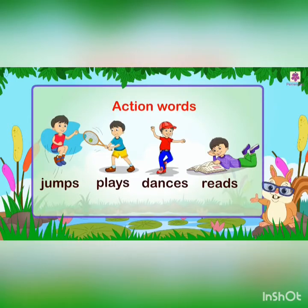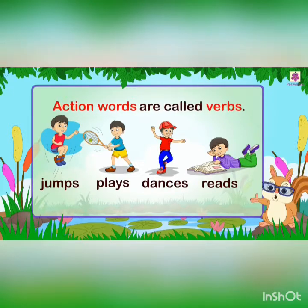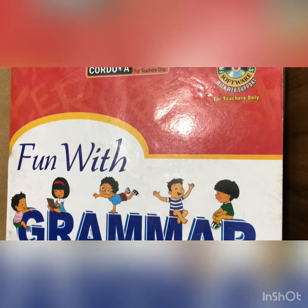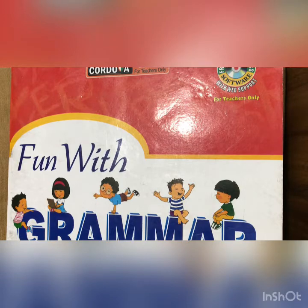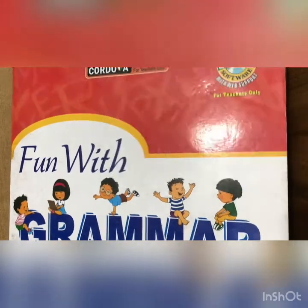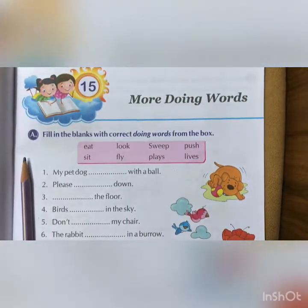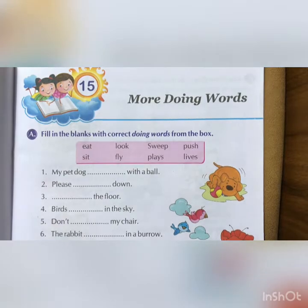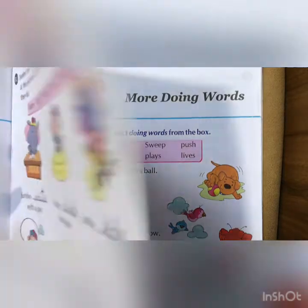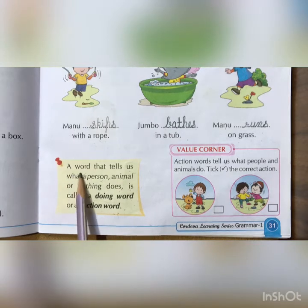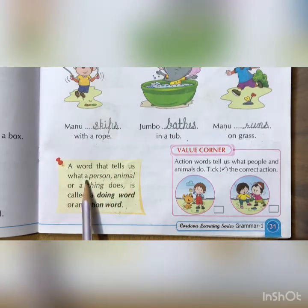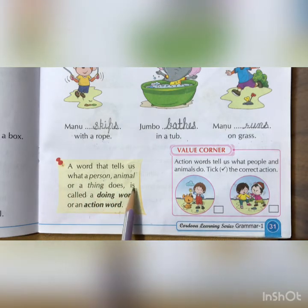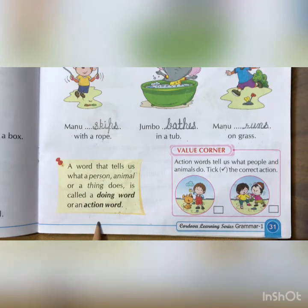They are also called verbs. Action words are called verbs. They are also called doing words. So now children, you can understand what are action words and what are doing words. A word that tells us what a person, animal or a thing does is called a doing word or an action word.